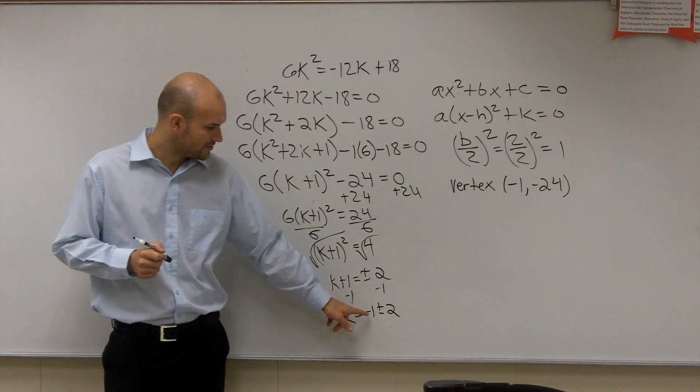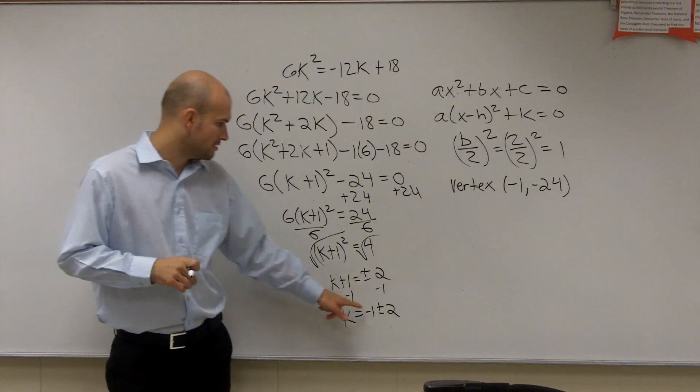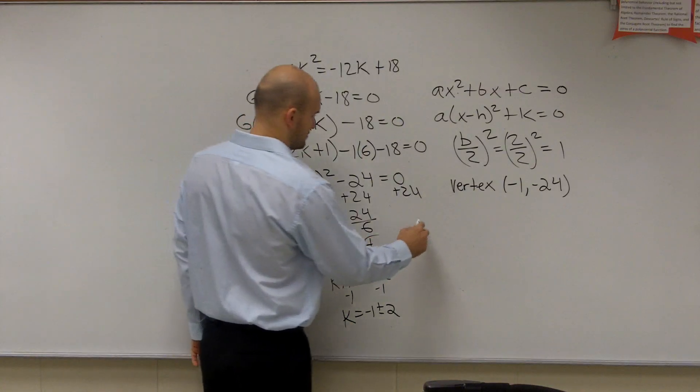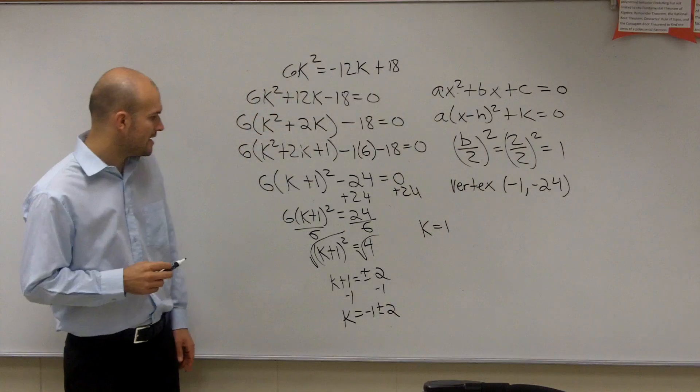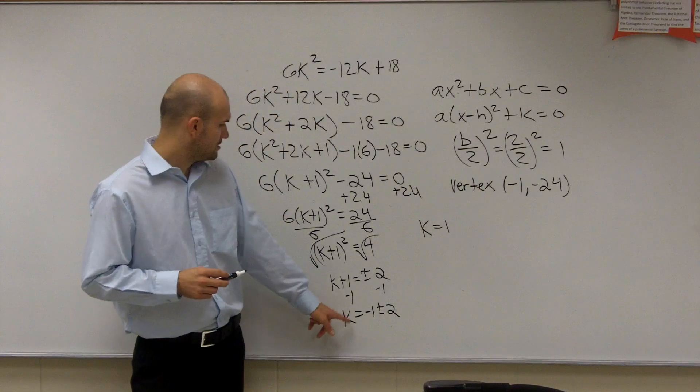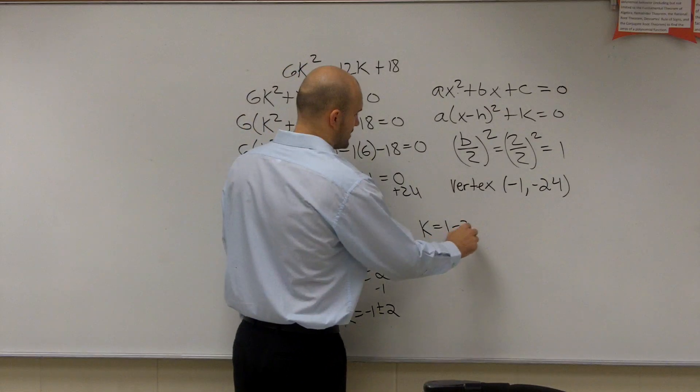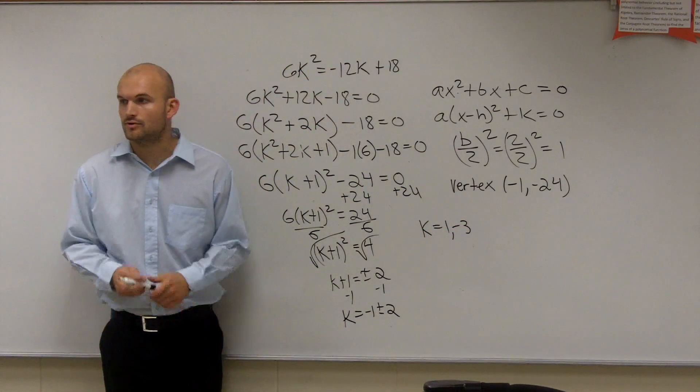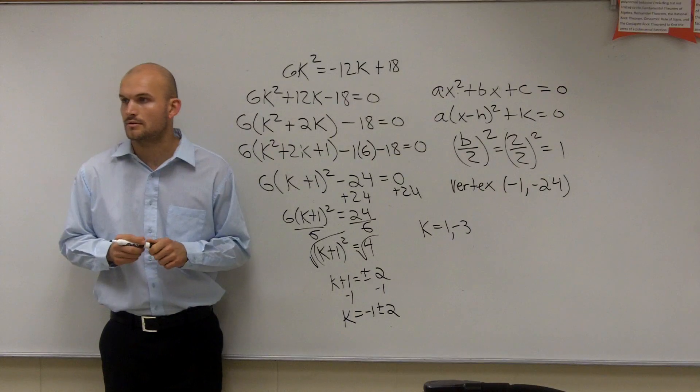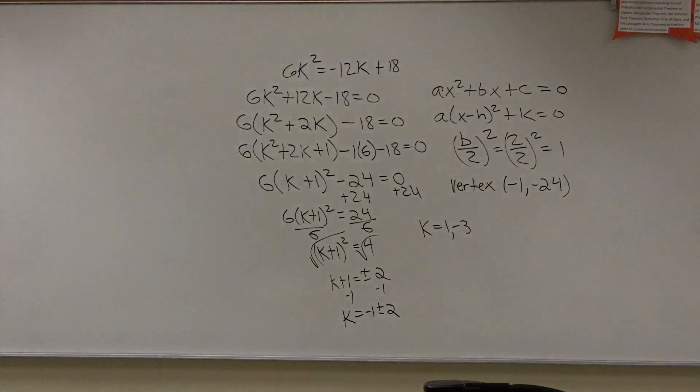And then what you have is negative 1 plus 2 is going to be 1. And then you have negative 1 minus 2 is going to be negative 3. And there you go for your two solutions. Alright? Questions? Alright. There you go. Thank you.